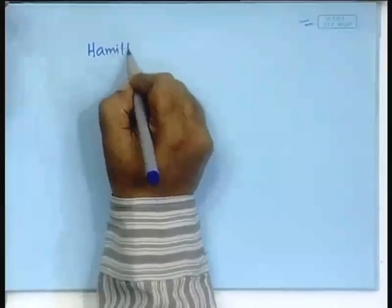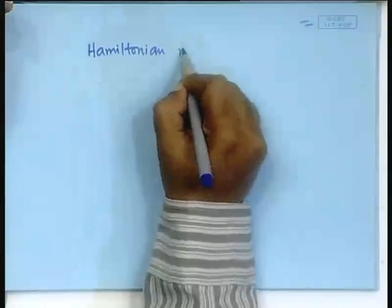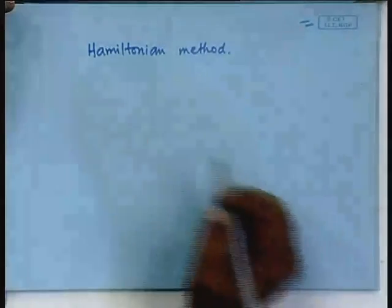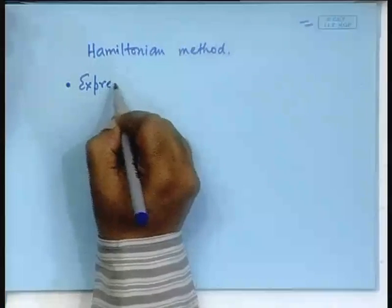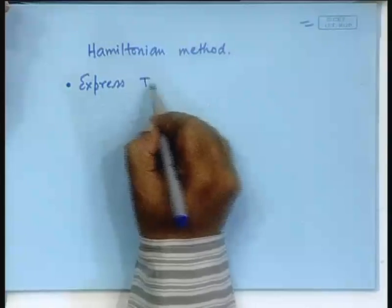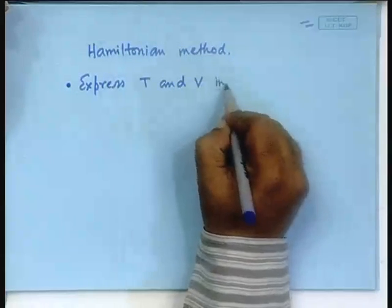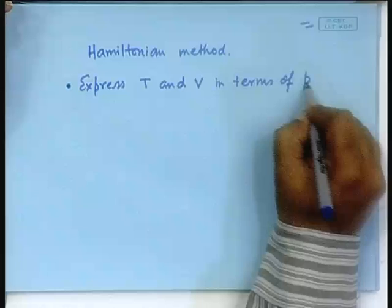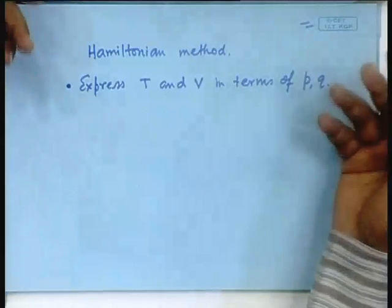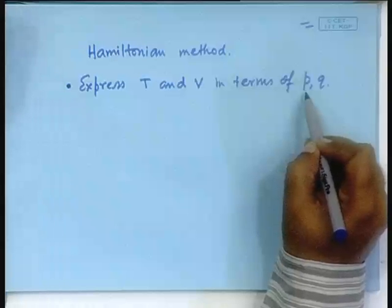In the last class we had seen that Hamilton's approach provides a nice way of writing the first order differential equations. In the Hamiltonian method, we first express T and V in terms of P and Q. In the Lagrangian method, we wrote it in terms of Q and Q-dot. So there lies one difference.